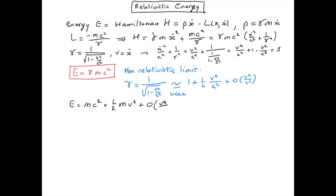Interestingly, we recover the non-relativistic kinetic energy K equal to one-half mv². But in addition to that, we also see a mass-energy term mc². This looks like a constant, since the mass of the system and the speed of light c are both constants. As we know, the potential energy of a system is always defined with respect to an arbitrary origin, so adding a constant to the total energy does not change the dynamics of the system.